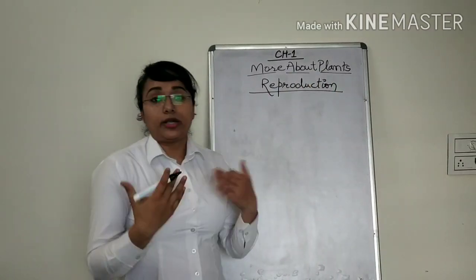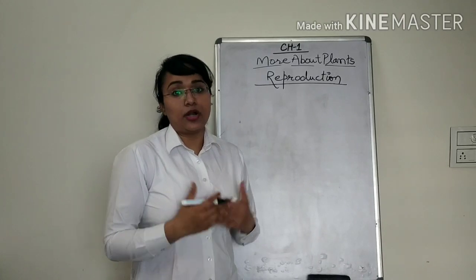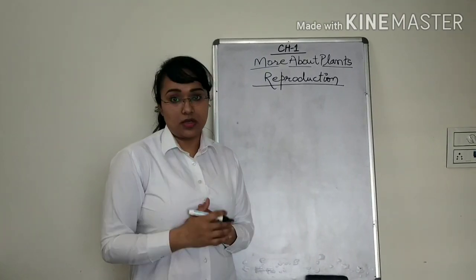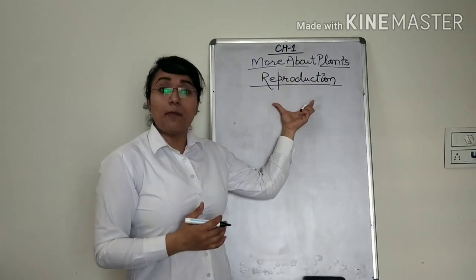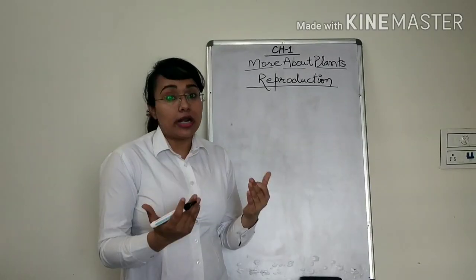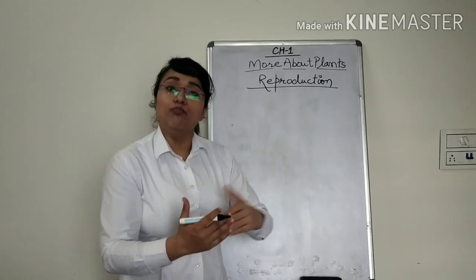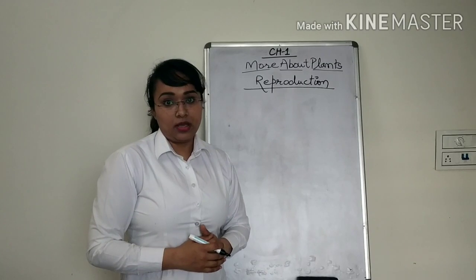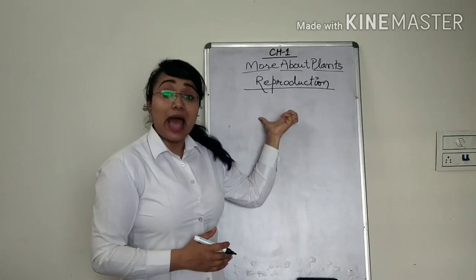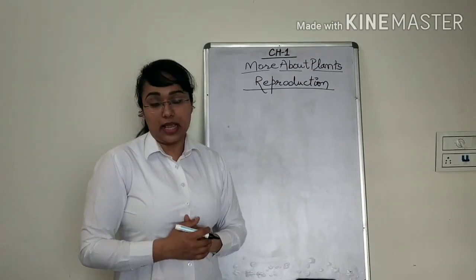Now what is reproduction? It is same as the reproduction process in humans. This is a process by which a living organism produces more of their kind. Now reproduction can happen in many ways in the plants.